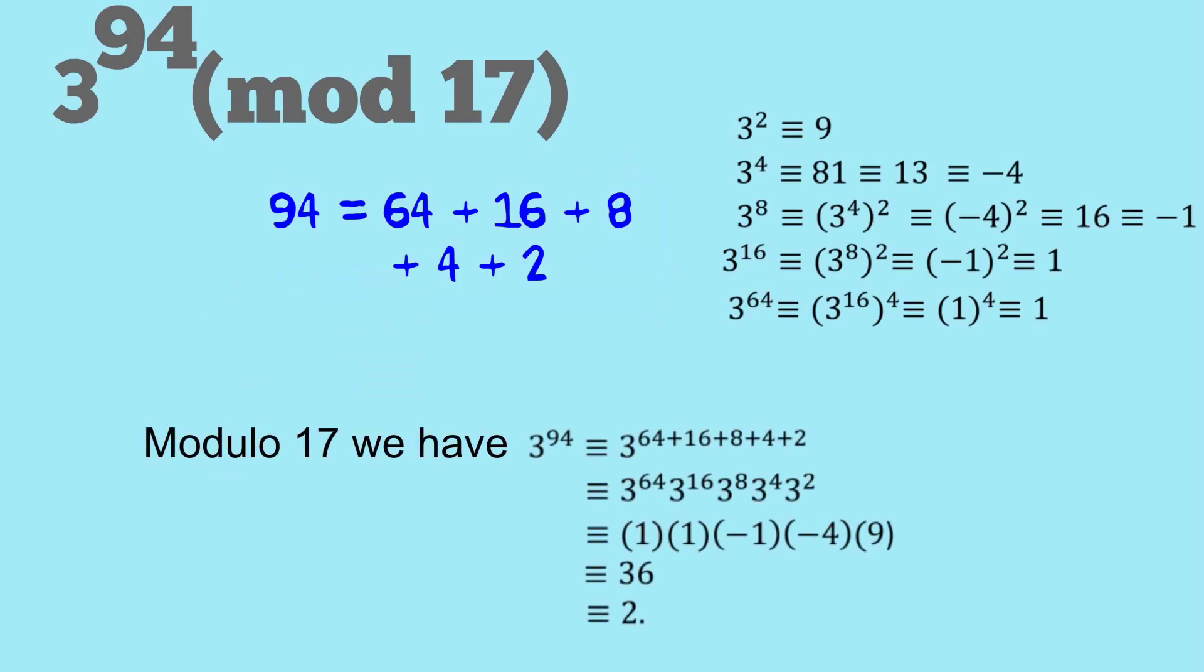So modulo 17, we have 3 to the 94 is equivalent to 3 to the power of all of those powers of 2 that we talked about. We can split that up into a product. So that equals 3 to the 64 times 3 to the 16 times all the way down to 3 to the 2.